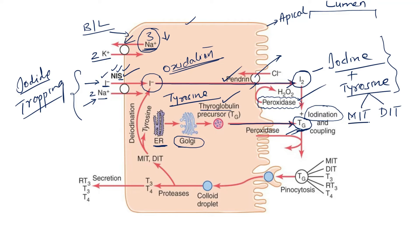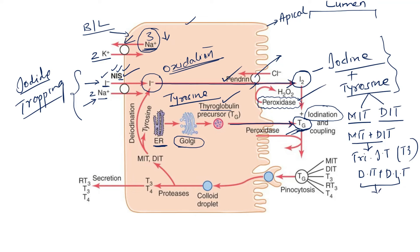Once iodination has occurred and MIT and DIT are formed, the next step is the coupling reaction. One monoiodotyrosine couples with one diiodotyrosine to form triiodotyrosine, which is T3. One diiodotyrosine combines with another diiodotyrosine to form tetraiodotyrosine, also called T4 or thyroxine. This coupling reaction also requires peroxidase. There is also formation of reverse T3, and MIT and DIT remain associated with the thyroglobulin molecule — this entire complex is called colloid.